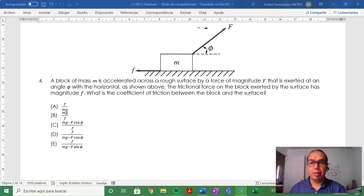Number 4. A block of mass m is accelerated across a rough surface by a force of magnitude f that is exerted at an angle phi with the horizontal as shown above. The frictional force on the block exerted by the surface has a magnitude f. What is the coefficient of friction between the block and the surface?